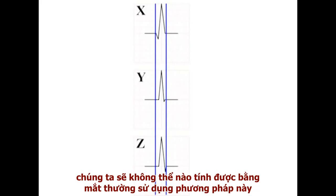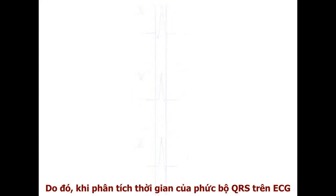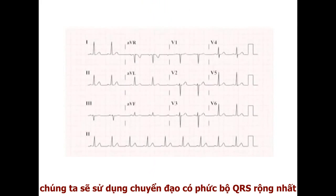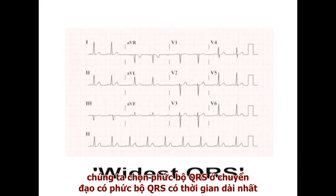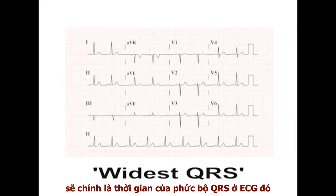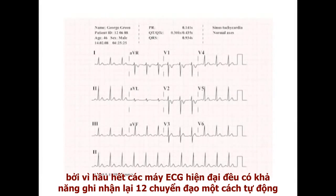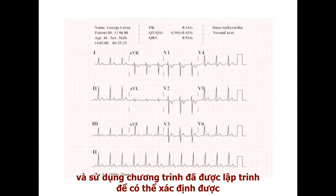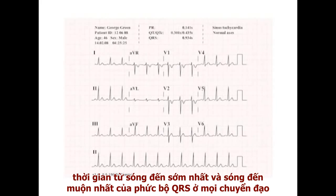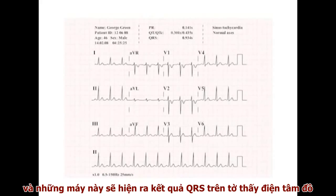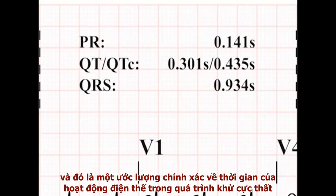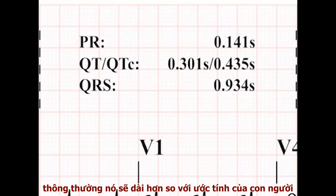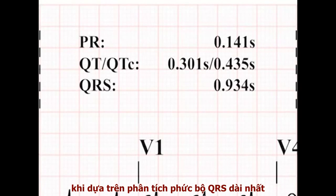Extending this type of analysis to 12 leads is not possible with the human eye. As a compromise, when analysing QRS duration manually, we choose the lead with the widest QRS complex. Most modern digital ECG machines record all 12 leads simultaneously and use computer programs to identify the times of the earliest and latest deflections of the QRS complex. These machines report an integrated QRS duration that will always tend to be longer than the human estimate based on the widest single lead.